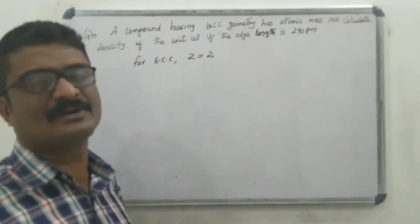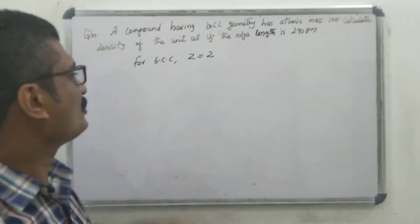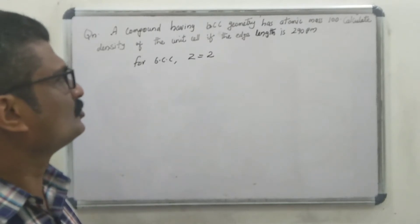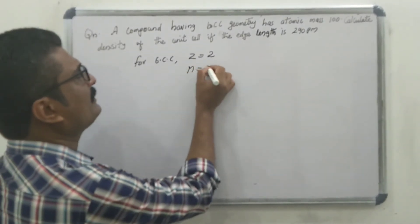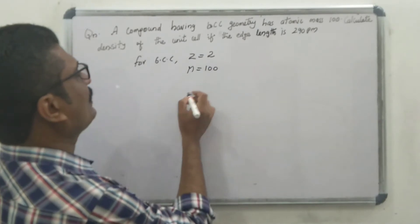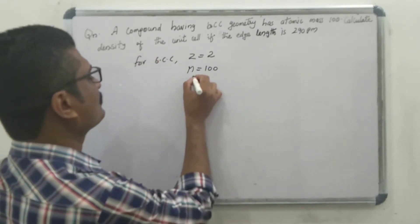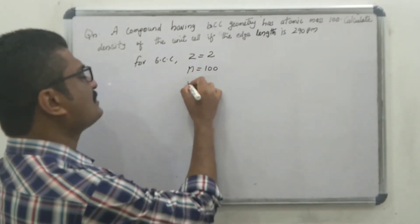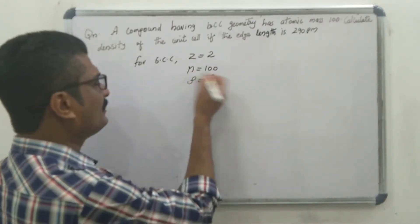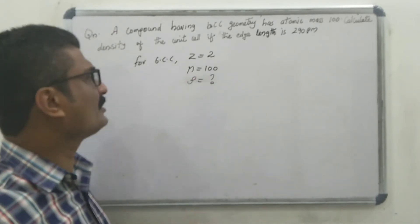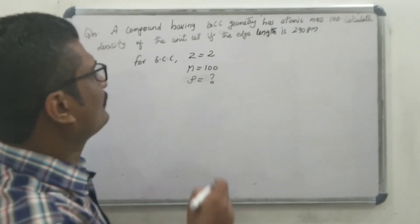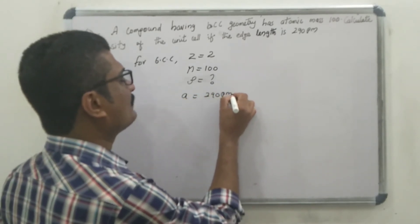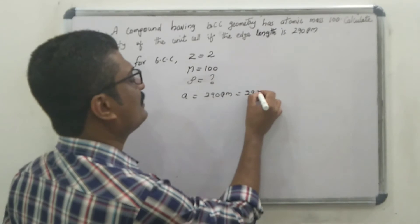For BCC, the value of Z equals 2, since the number of atoms per unit cell in BCC is 2. The atomic mass M is 100. Our aim is to find out the density rho of the unit cell.